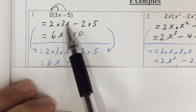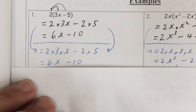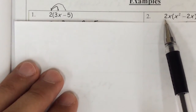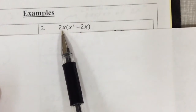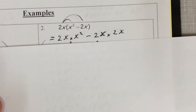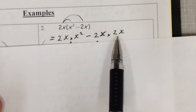You can jump right from there: 2 times 3x is 2 times 3 times x. The next example: the outside term is not just a constant, it's a term — 2x times x squared minus 2x. We're going to do the same thing: multiply 2x times x squared and 2x times 2x. So we've got 2x times x squared minus 2x times 2x.